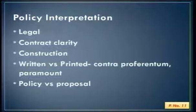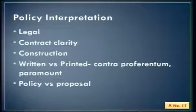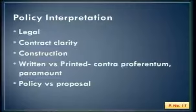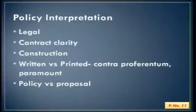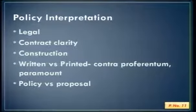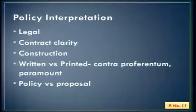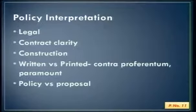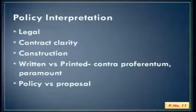Two important conditions in written and printed interpretation: the first is contra preferentum — any ambiguous condition goes against the person who drafted the document, i.e., the insurance company. Any condition contrary to something stated earlier will be interpreted by the court in favor of the customer. The second is clause paramount — even if there is contrary wording in the policy, a clause paramount stated against a particular condition overrides all contrary definitions. Clause paramount is used occasionally in marine insurance.